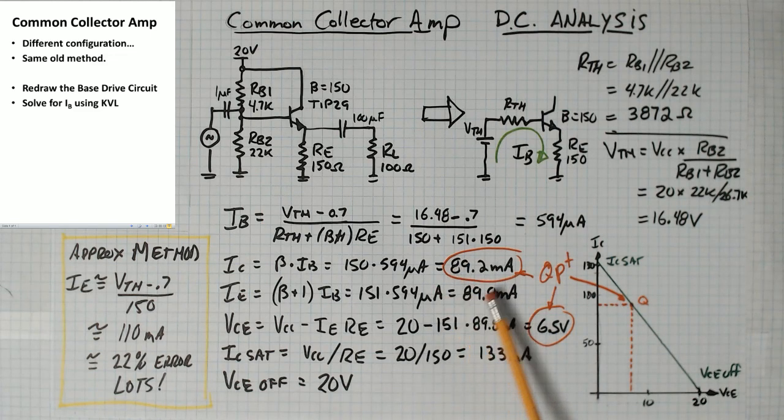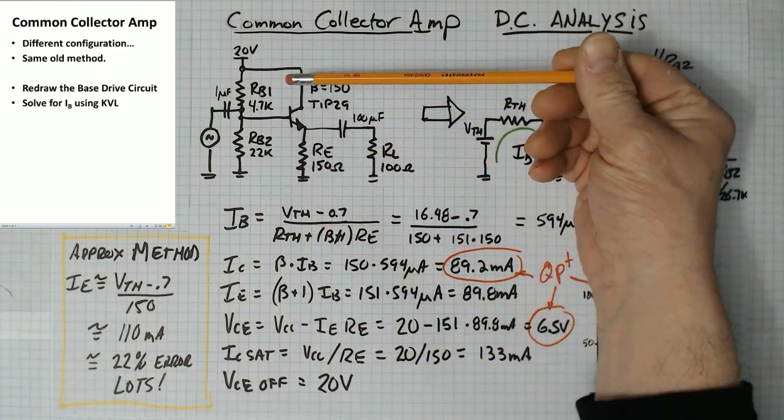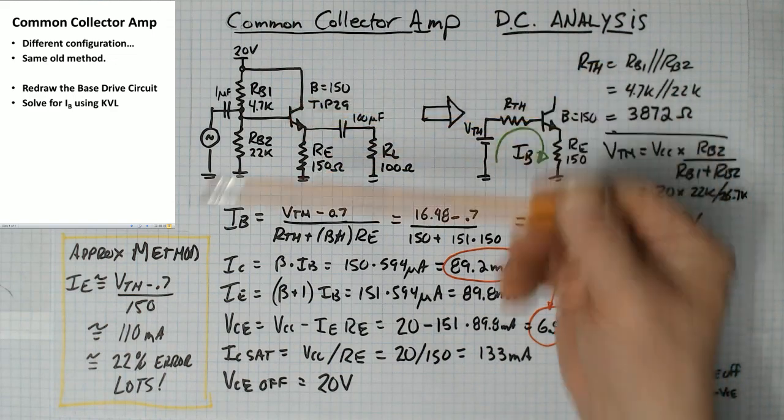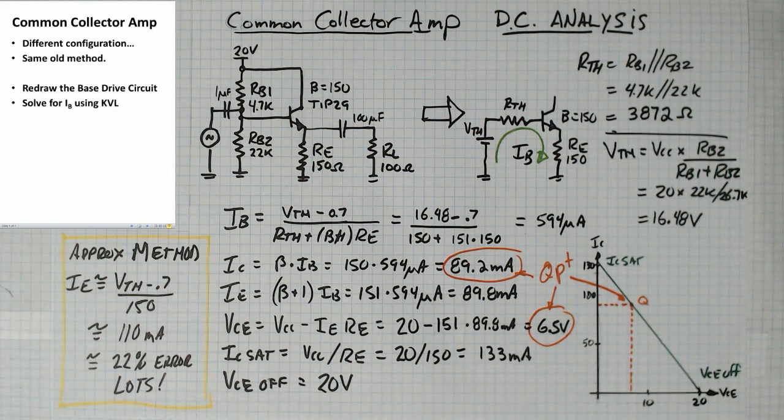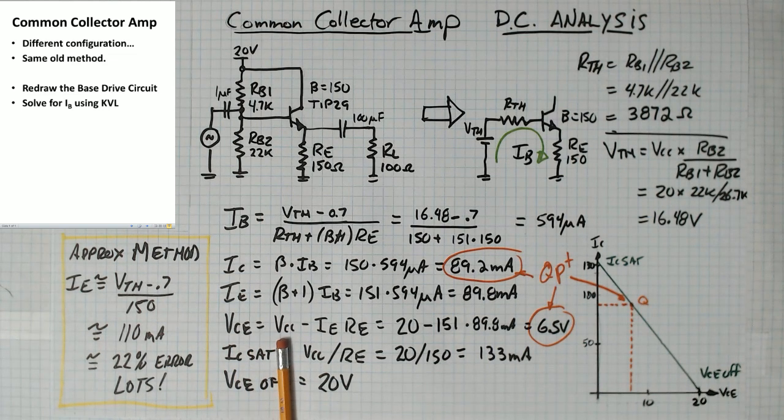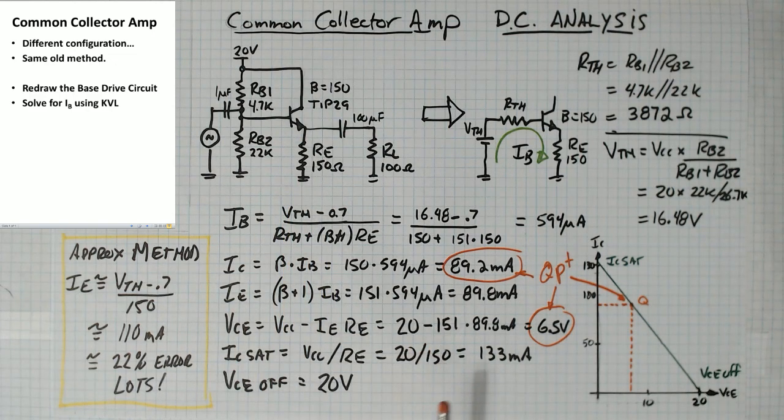And now that we've got the currents, we can figure out the voltages. So let's see here. We know what these currents are. This is 20 volts. If I know the current through this guy, I can figure out the voltage across the transistor. So VCE, the voltage across the transistor, is going to be the supply voltage minus IE times RE, which is the voltage across that resistor. So 20 minus 151 times 89.8 milliamps gets you about 6.5 volts.